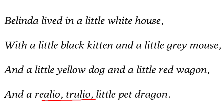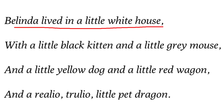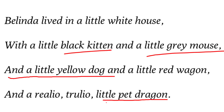We need to understand 'really or truly' here. The actual words are 'real' and 'true', but here the poet has used poetic license — the poet has the right to change words to bring rhythm. So 'real' became 'really' and 'true' became 'truly'. This is the use of poetic license. So a lady named Belinda lived in a little white house with pet animals including a little black kitten, a little grey mouse, a little yellow dog, and a little dragon.